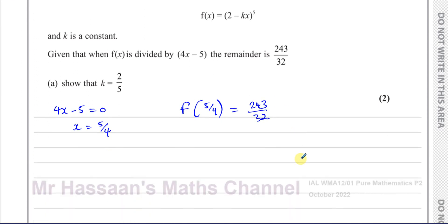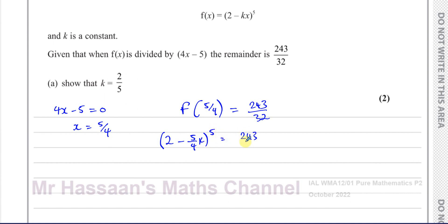By doing that, we can show that k equals 2 fifths, by substituting x equals 5 over 4 and making an equation from this. So we say: 2 minus 5 over 4 times k, raised to the power of 5, equals 243 over 32. To solve this, we take the fifth root of both sides, which gets rid of the power of 5.